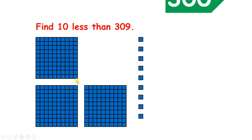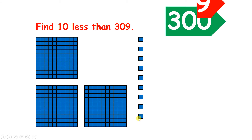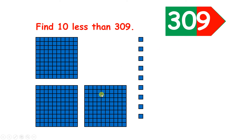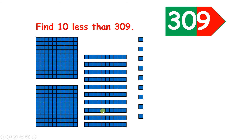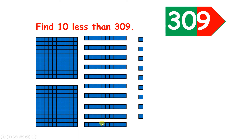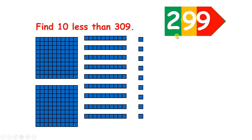Now we have three hundreds and nine units, so we have three hundred and nine. So how can we subtract ten from three hundred and nine? Well, if we regroup or exchange one of our hundreds for ten tens, we can subtract ten to leave us with two hundreds, nine tens, and nine units, so we have two hundred and ninety-nine.